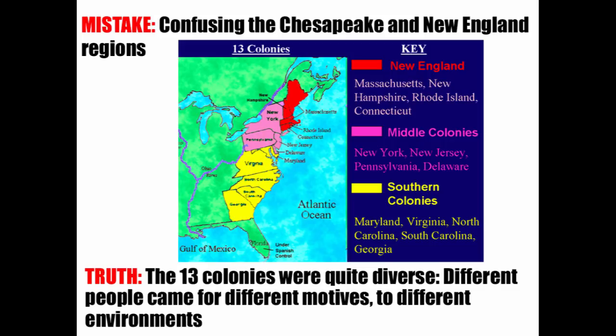Another mistake is confusing the Chesapeake and the New England regions. The 13 colonies were quite diverse — different people came for different motives to different environments. The Chesapeake is not where the Pilgrims celebrated Thanksgiving, and New England is not where Pocahontas's story took place. Know the difference between these two regions.